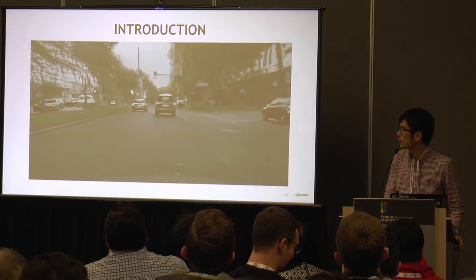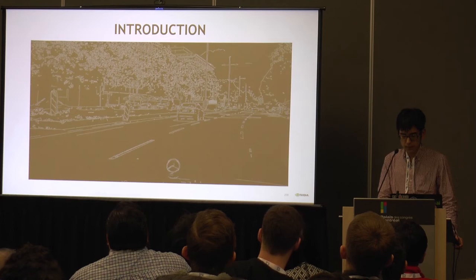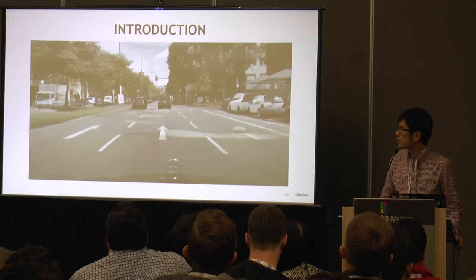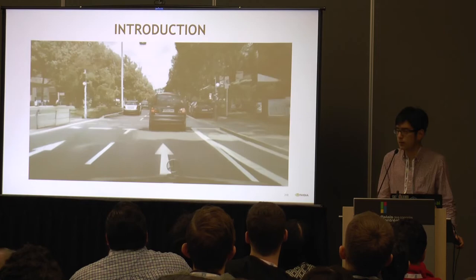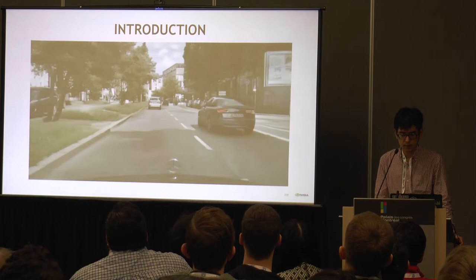You can see that each frame is high quality and the results are temporally smooth. Another example: given an edge map of the scene, we can also turn it into photorealistic videos. You can see that we can capture all the details in the trees, the cars, the buildings as well. The results are again temporally smooth and do not have any flickering.